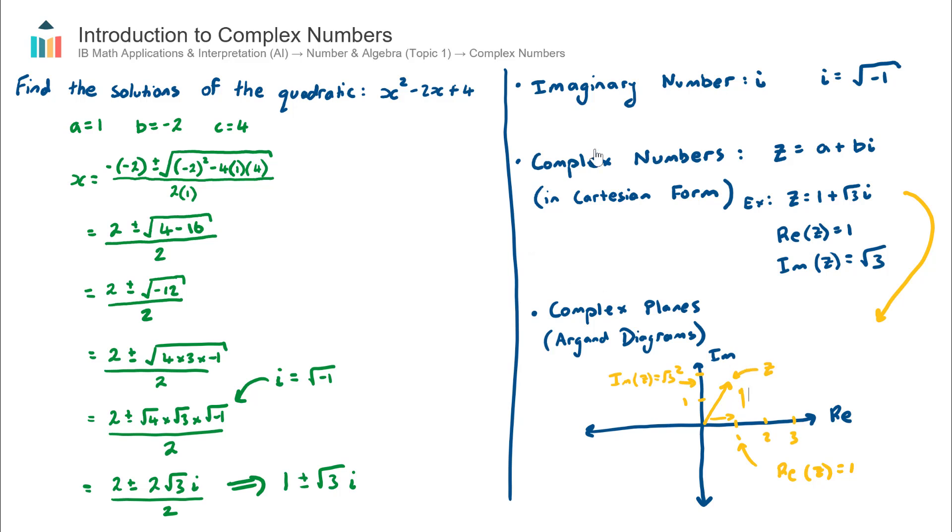So this right here is actually my complex number z, which is 1 + √3i. Okay, so that is all that is to it for this first introduction video. We covered this new type of number i, what a complex number is in Cartesian form, and then how to visualize that on our complex plane.